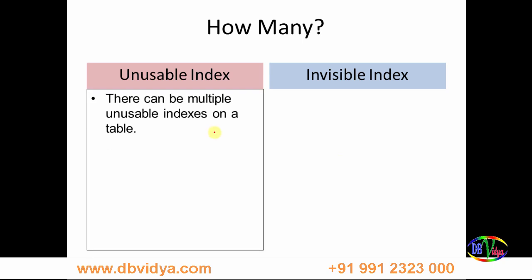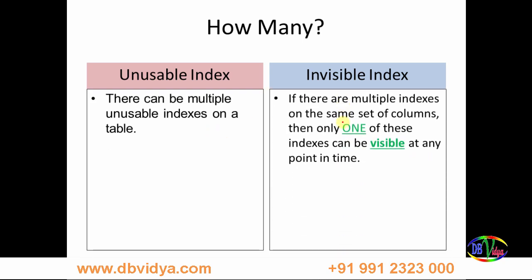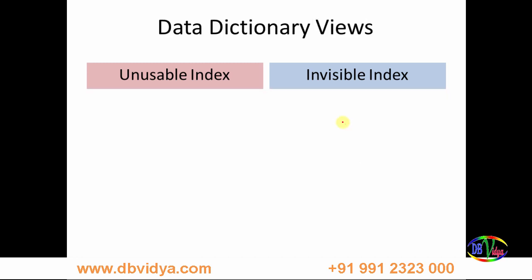You can have multiple unusable indexes on a table. For invisible indexes, you can also have multiple indexes, but at any given point in time only one index is visible — you can have more than one invisible index, but there can only be one visible index at any given time.